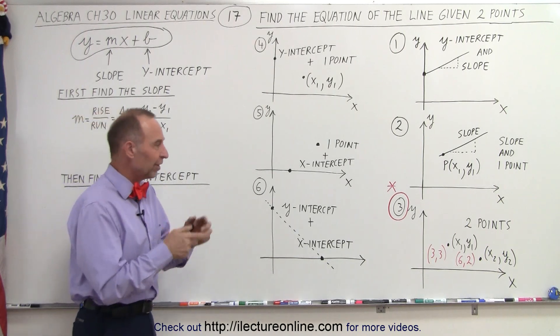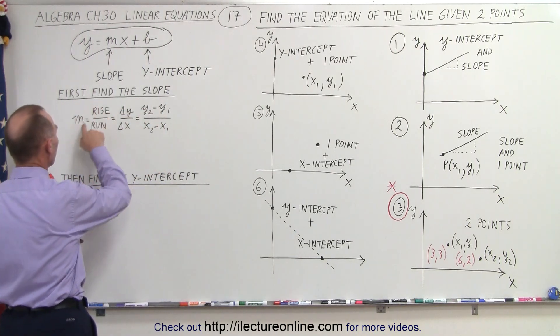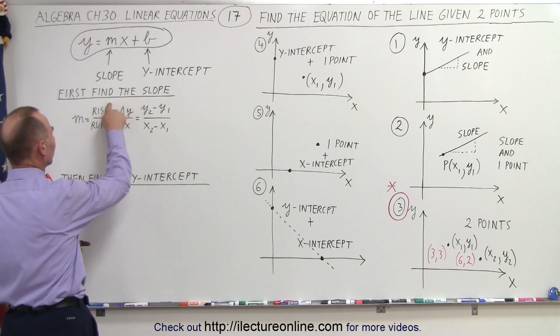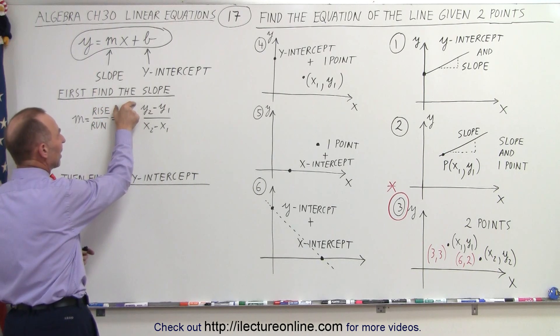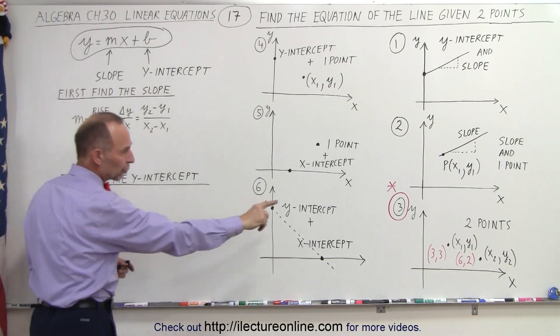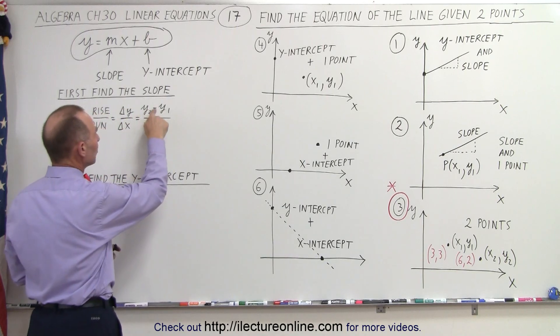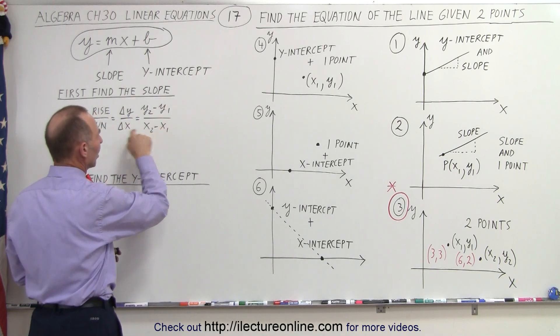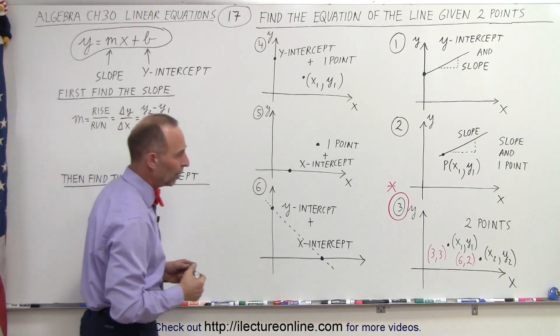First let's find the slope. The definition of the slope is the rise over the run — the change in the y-value divided by the change in x-values for the two points given. So y2 minus y1 divided by x2 minus x1.